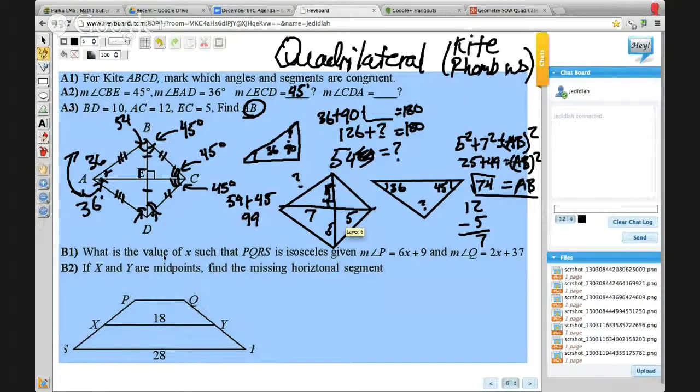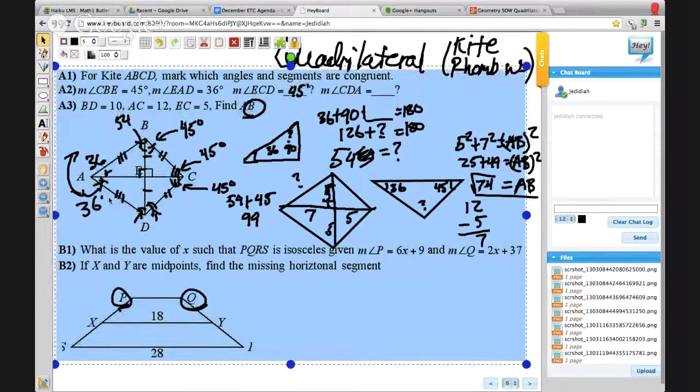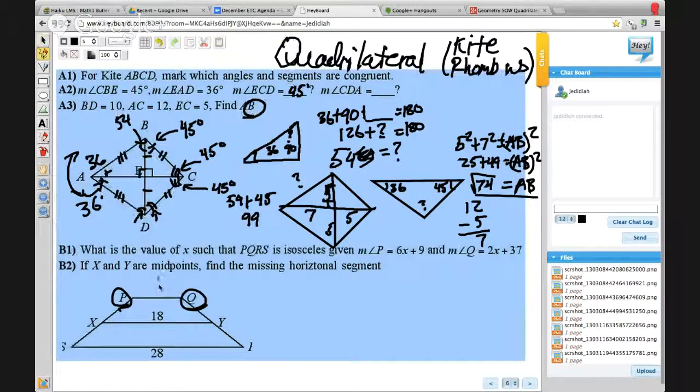All right. So what is the value of X such that PQRS is an isosceles. Oh, it's isosceles. And P is something and Q is something else. Because this would be isosceles, those should actually be symmetrical and they should be equal. So angle P should be congruent to angle Q.